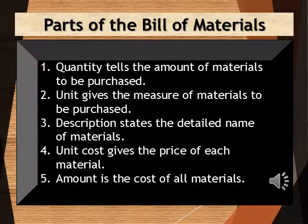Parts of the bill of materials: The first column is the quantity, which tells the amount of the materials to be purchased. Second is the unit, which gives the measure of materials to be purchased. Third is the description, which states the detailed name of the materials. The fourth column is the unit cost, which gives the price of each material. And the last column, which is the amount, is the cost of all materials.